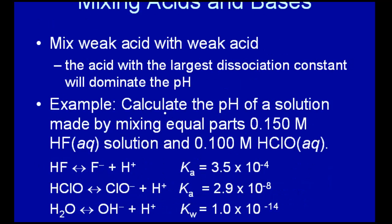Another problem we worked on last Friday was to calculate the pH of a solution made by mixing equal parts of two weak acids. We say that mixing weak acid with weak acid, the acid with the largest dissociation constant will dominate the pH, since that's the one that dissociates more. In water we have three dissociation constants to worry about: HF, HClO, and of course water at 10 to the minus 14, so the protons from water will be very small. HF has the largest Ka, meaning most of the H⁺ will come from HF dissociation. Let's go ahead and figure that out using the ICE table, without the shortcuts we used in class last Friday.